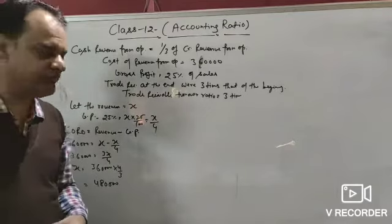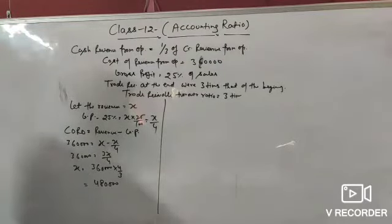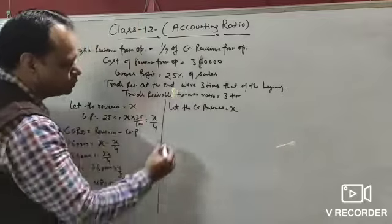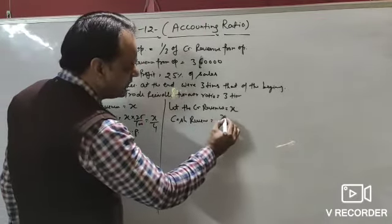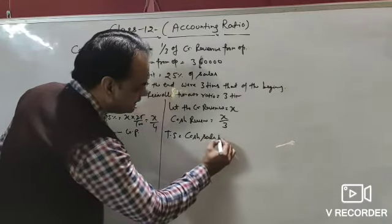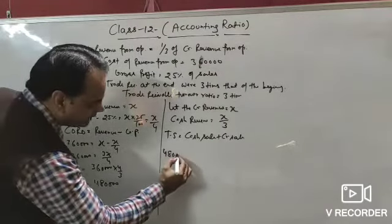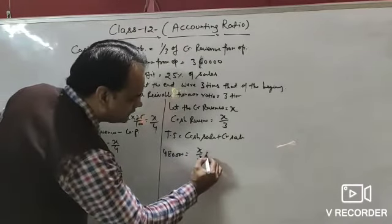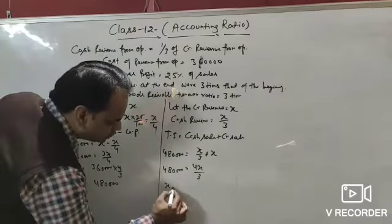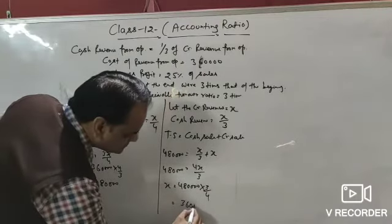Cash revenue from operation is 1/3 of credit revenue. Let credit sale = x, so cash sale = x/3. Total sale = cash sale + credit sale = x/3 + x = 4x/3 = ₹4,80,000. Solving: x = ₹4,80,000 × 3/4 = ₹3,60,000. So credit revenue from operation = ₹3,60,000.